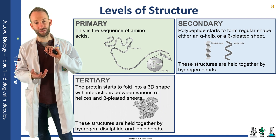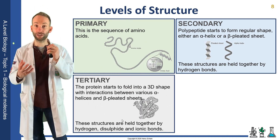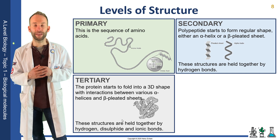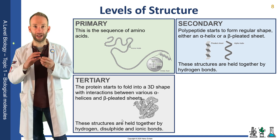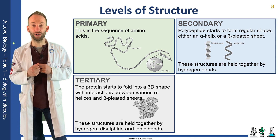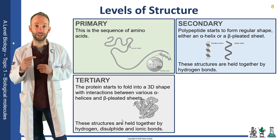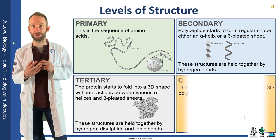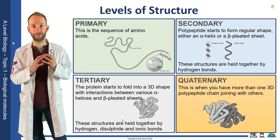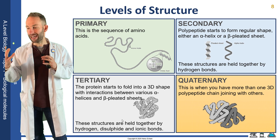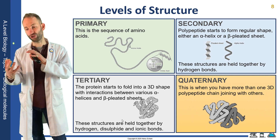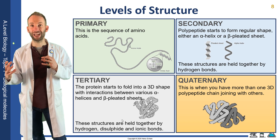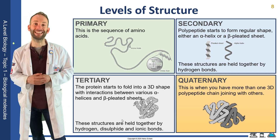Tertiary structure is where it gets more interesting — this is where it starts forming more complex 3D structures, controlled by hydrogen bonds, ionic bonds, and disulfide bonds. Quaternary structure is where you have a whole polypeptide folded up, and then another polypeptide, and they're joined together. So quaternary structure means more than one polypeptide chain joined together.